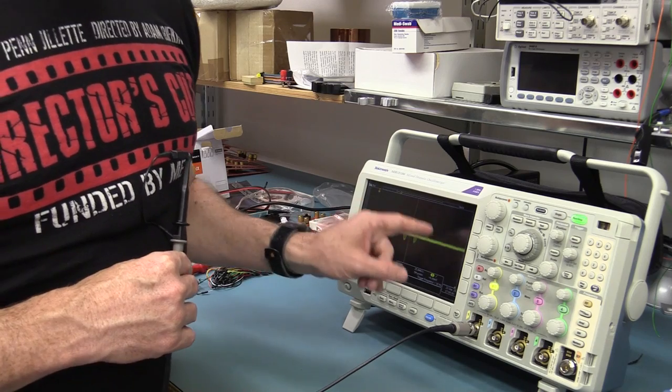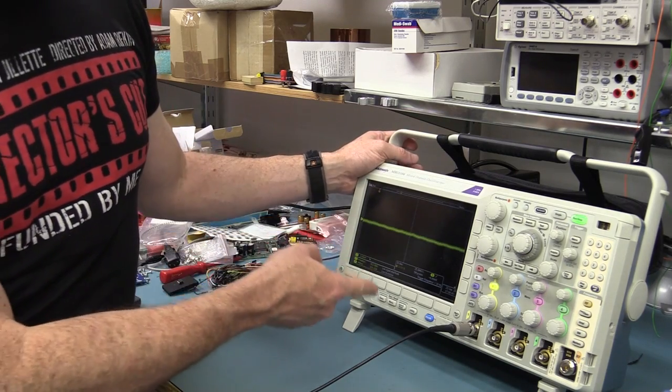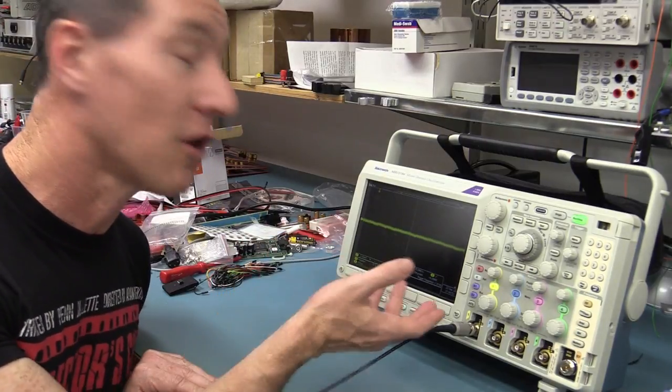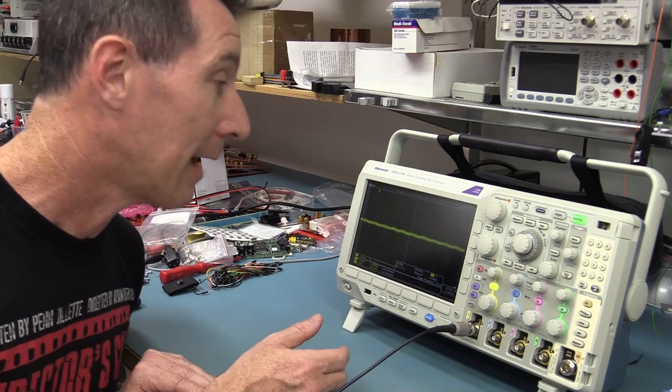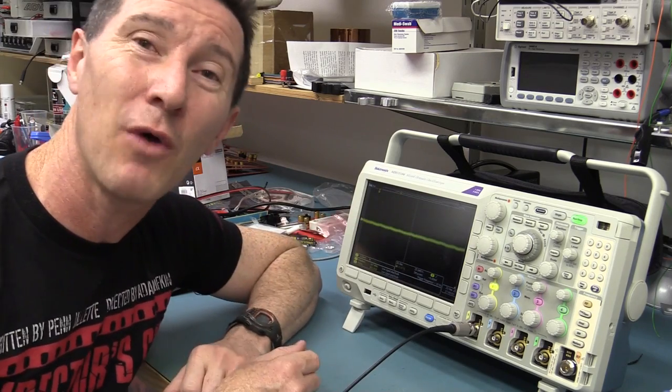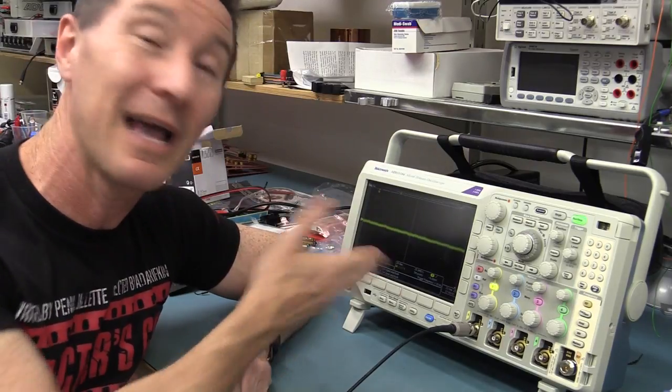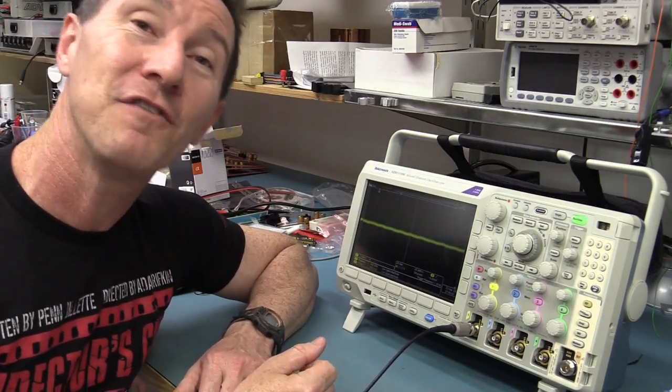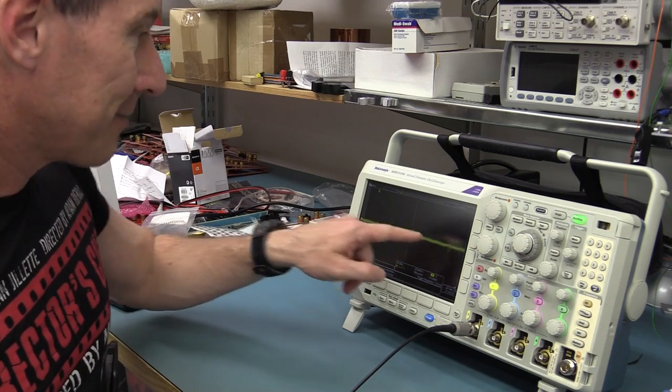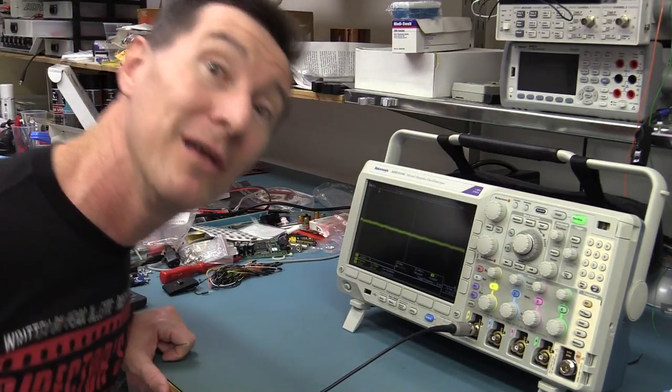Because one thing that this scope, this Tektronix MDO 3000, doesn't have is software low-pass or high-pass filtering as part of the math function. So really quite annoying. It's got all this advanced math capability, all sorts of fantastic stuff this thing can do, but it can't do any software filtering to take out that 50 hertz, which is kind of annoying. Anyway, but hey, there we go. We're picking up some packets. I'm surprised at that single loop. I thought it would be too low-level, but that works a treat. So, let's have a look at the data.